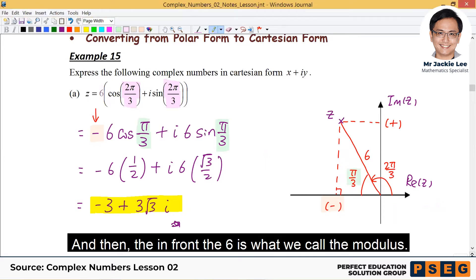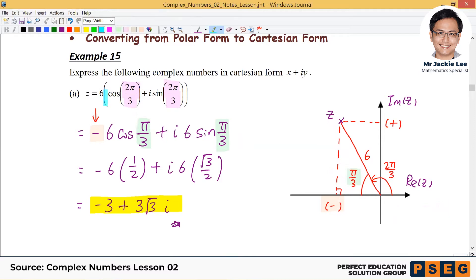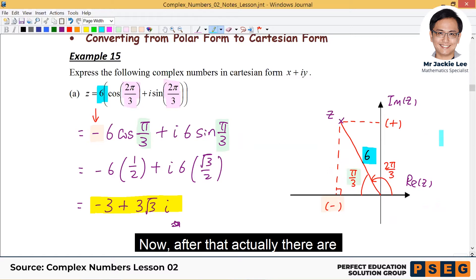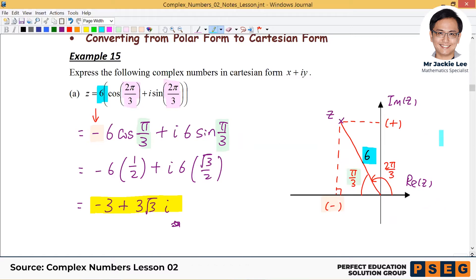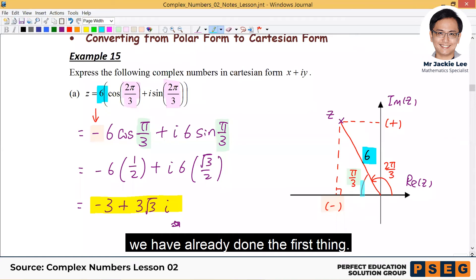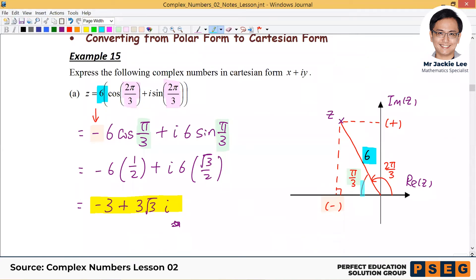And then in front of the 6 is what we call the modulus. Now, after that, actually there are two things we need to do now. In fact, just now I mentioned this π over 3, we have already done the first thing already.